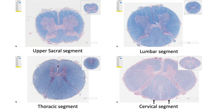Secondly, the grey matter is much more in quantity, especially in the ventral horn, at cervicothoracic and lumbosacral enlargements where additional neurons cater to the limbs. In comparison, the upper cervical, thoracic, and lower sacral segments show relatively lesser quantity of grey matter.